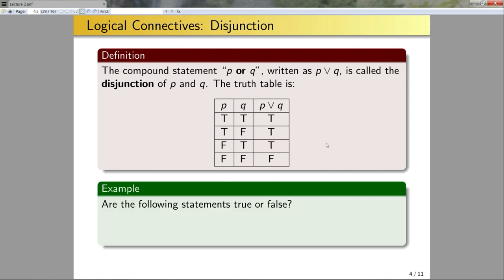Are the following statements true or false? 'Dogs are animals or four is less than 3.9.' Dogs are animals, but four is not less than 3.9. Therefore, we're at the entry in the truth table for P∨Q where P is true and Q is false, and the statement is thus true.